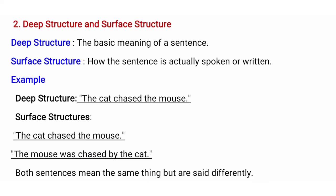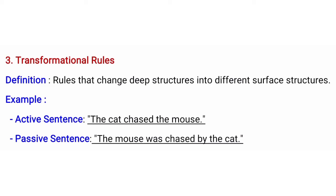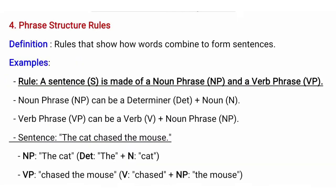Moving toward transformational rules: transformation means changing one sentence structure into another. So transformational rules are a set of rules that change deep structures into different surface structures. For example, the active sentence 'the cat chased the mouse' can be transformed into the passive sentence 'the mouse was chased by the cat.' Both have the same meaning but are pronounced differently.